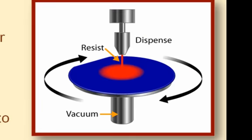Resist is applied either before the chuck starts spinning, which is called a static dispense, or once the chuck starts to spin, which is called a dynamic dispense.